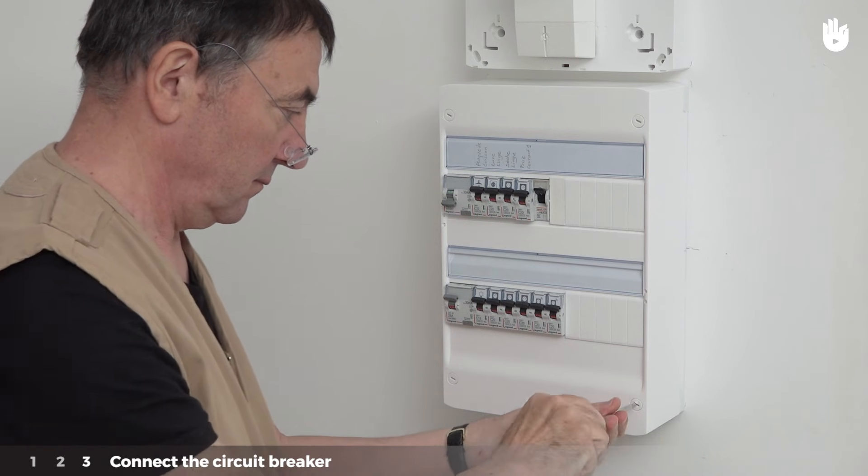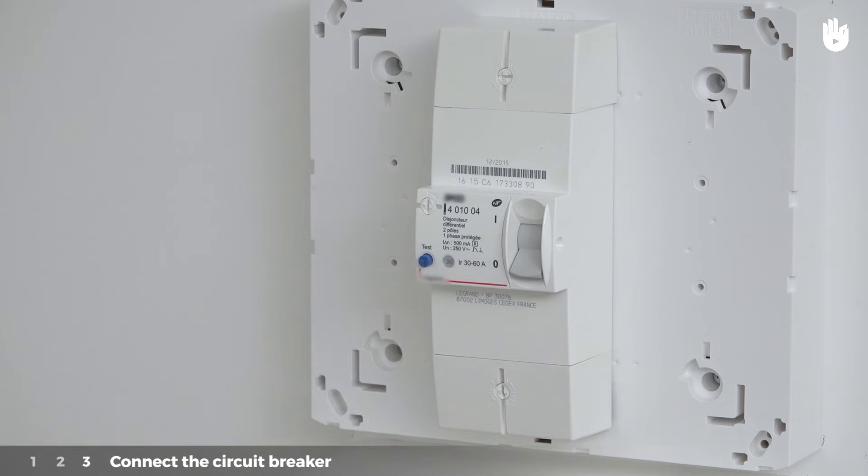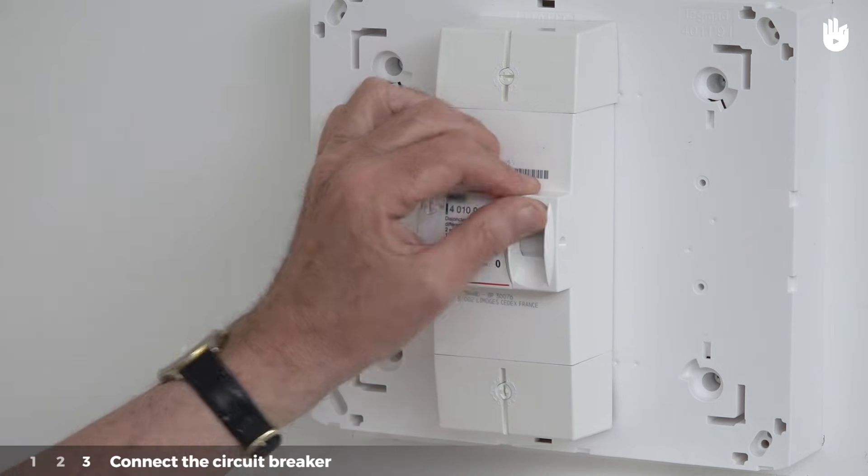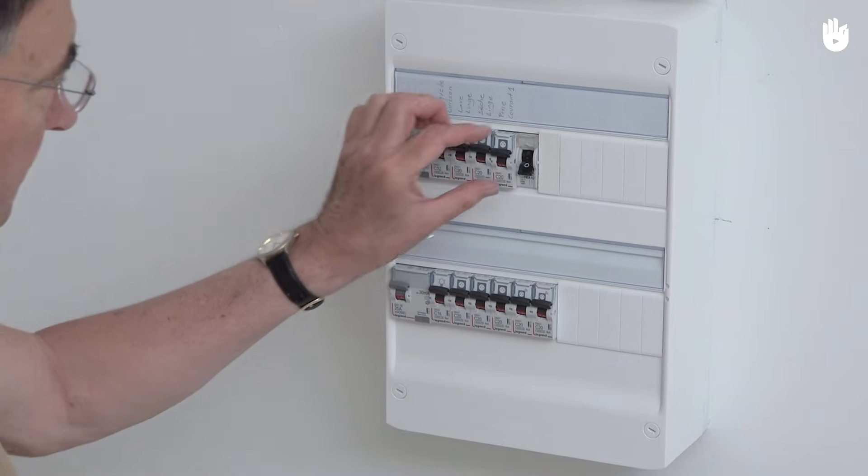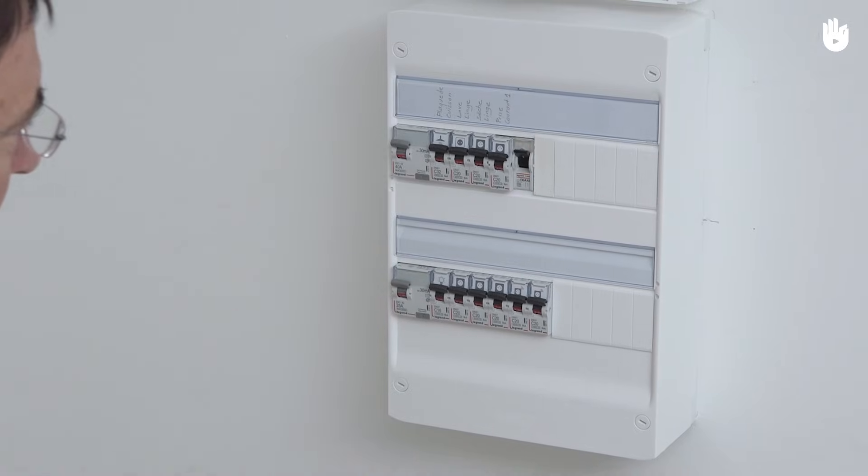Replace the cover of the electrical panel. Turn the main circuit breaker back on. You now know how to add a circuit breaker to an electrical panel.